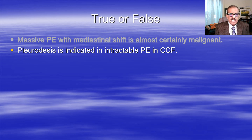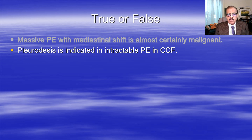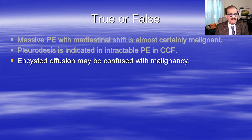Pleurodesis is indicated in intractable pleural effusion in CCF (congestive cardiac failure) patients who have intractable pleural effusion that does not resolve. Pleurodesis is a technique where you remove fluid and inject something - it could be talc, or chemicals such as Corynebacterium antigen - to induce inflammation and closure of the pleural space. This is still a valid treatment in some cases.